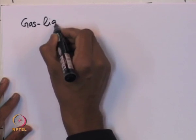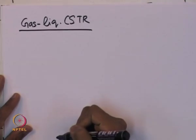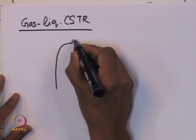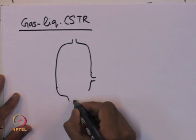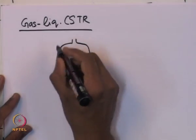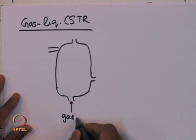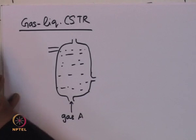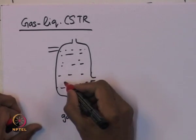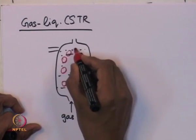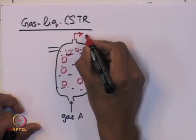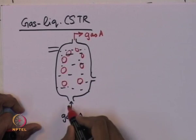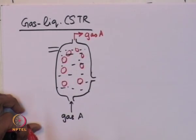Let us look at a specific case of a gas-liquid CSTR. Suppose I take a tank filled with liquid, and gas A is bubbled through the liquid from the bottom, entering the tank and leaving from the top of the reactor.